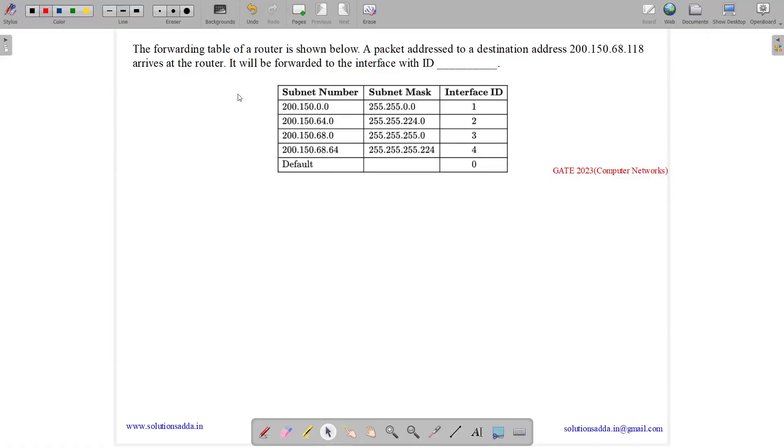This question belongs to computer network subject and was asked in GATE CSE 2023. The question states: the forwarding table of a router is shown below. We are given the forwarding table. A packet addressed to a destination address 200.150.68.118 arrives at the router. It will be forwarded to the interface with ID.